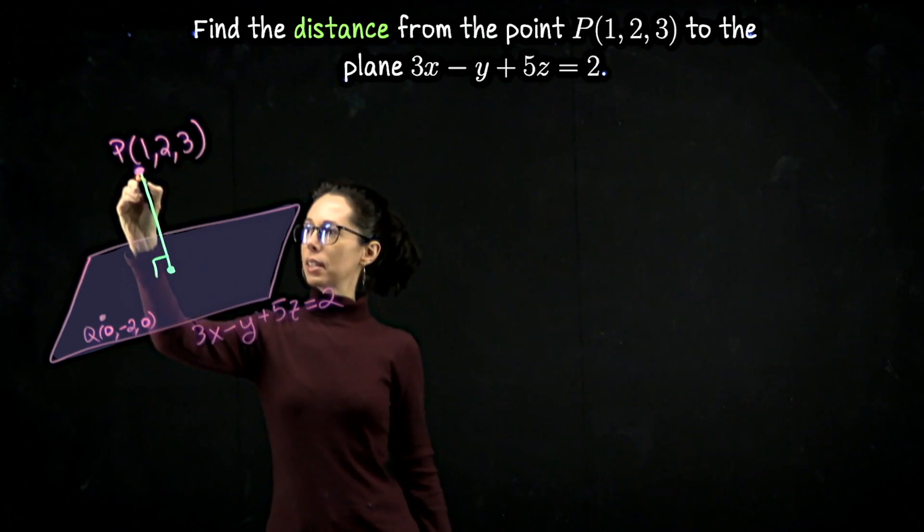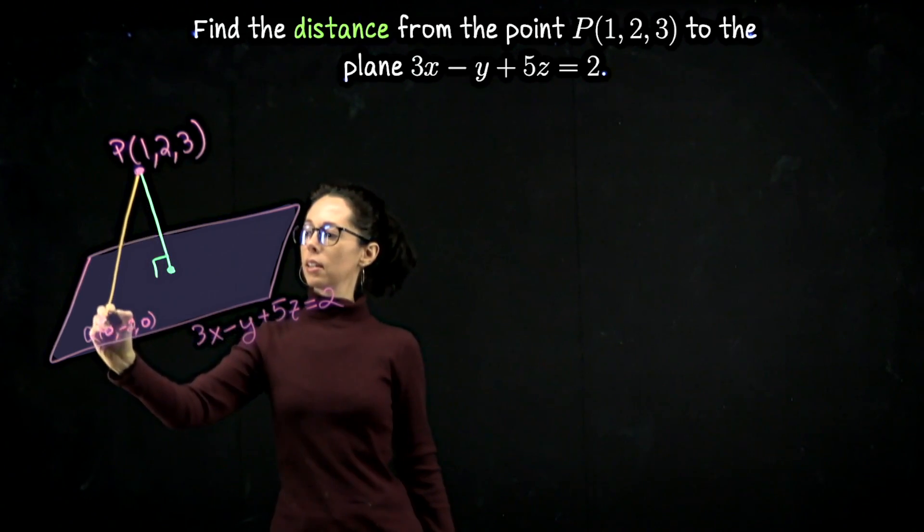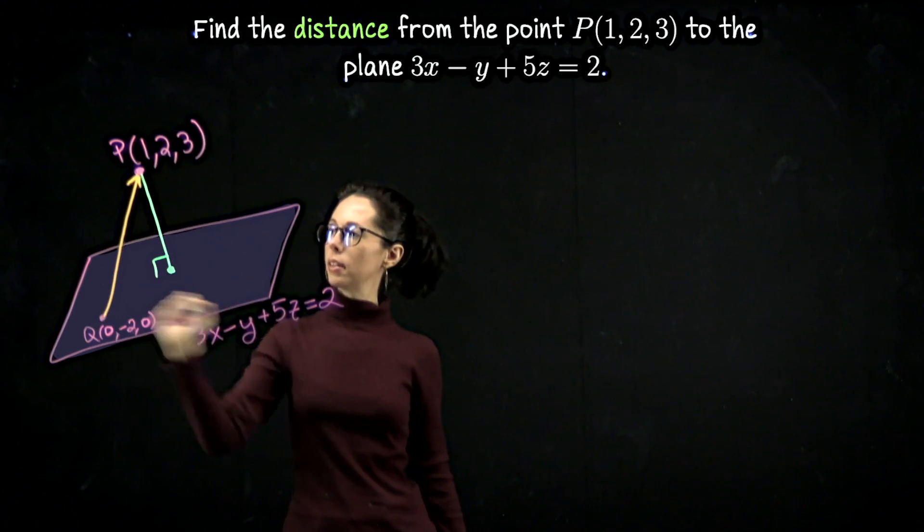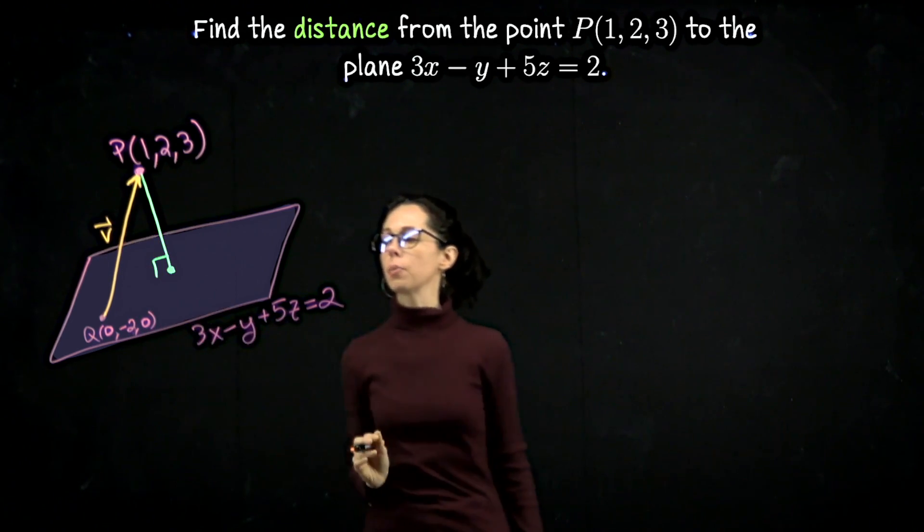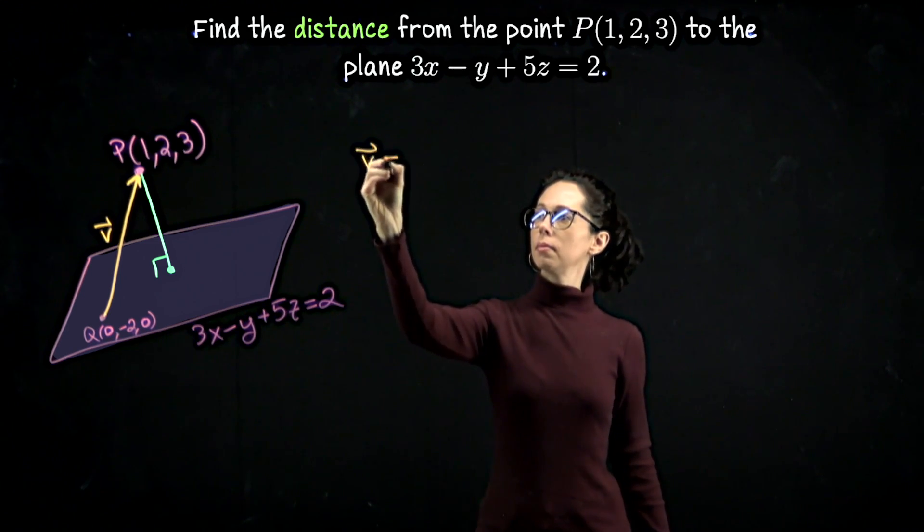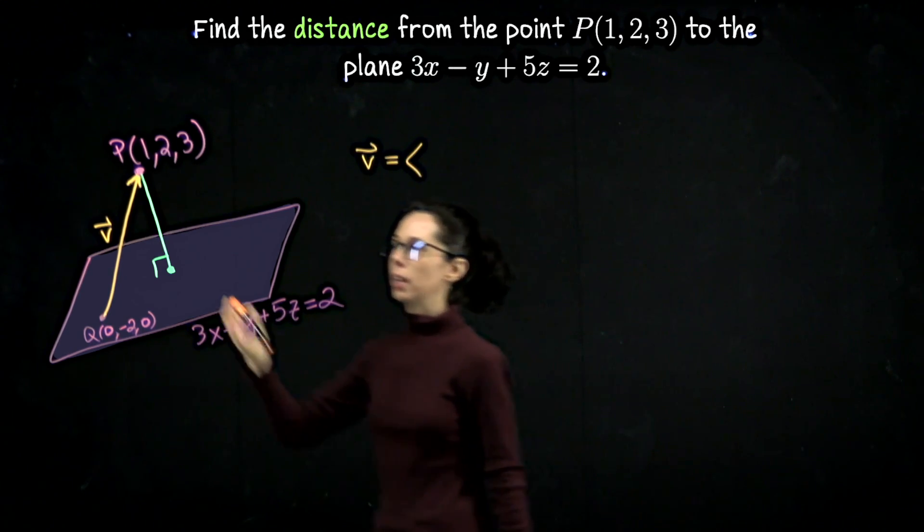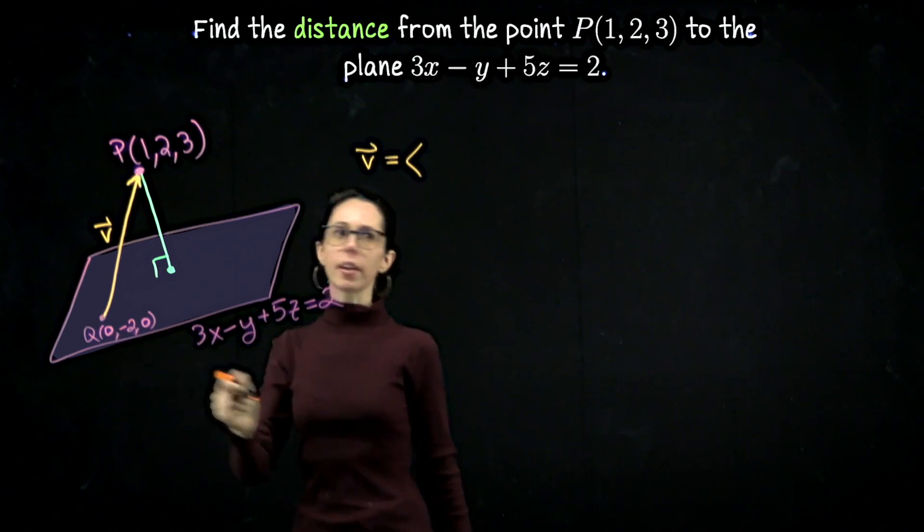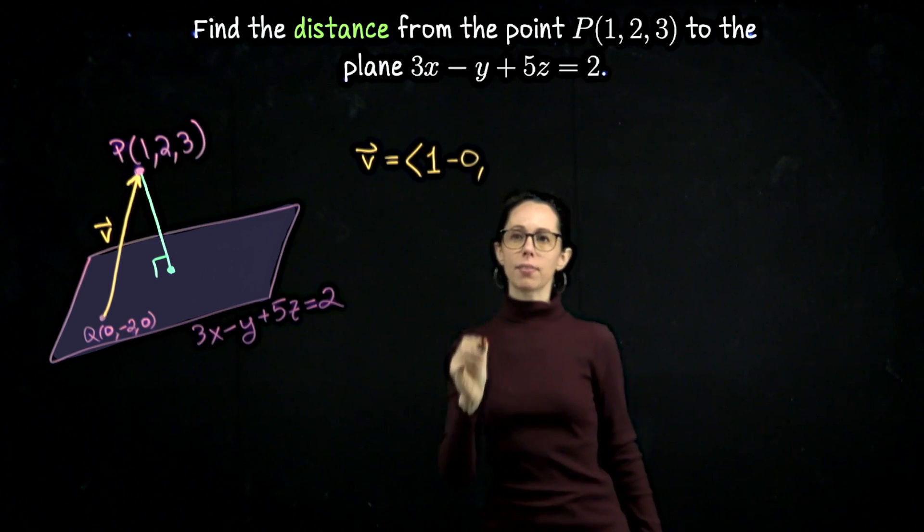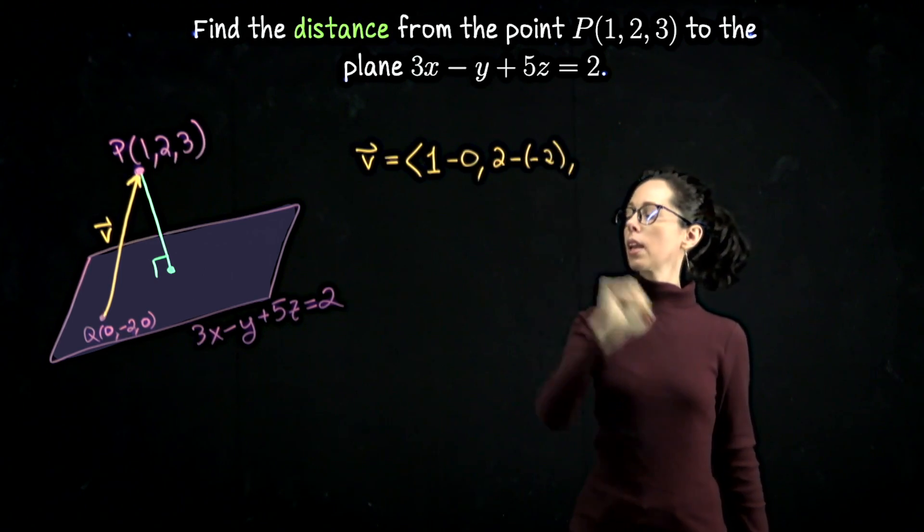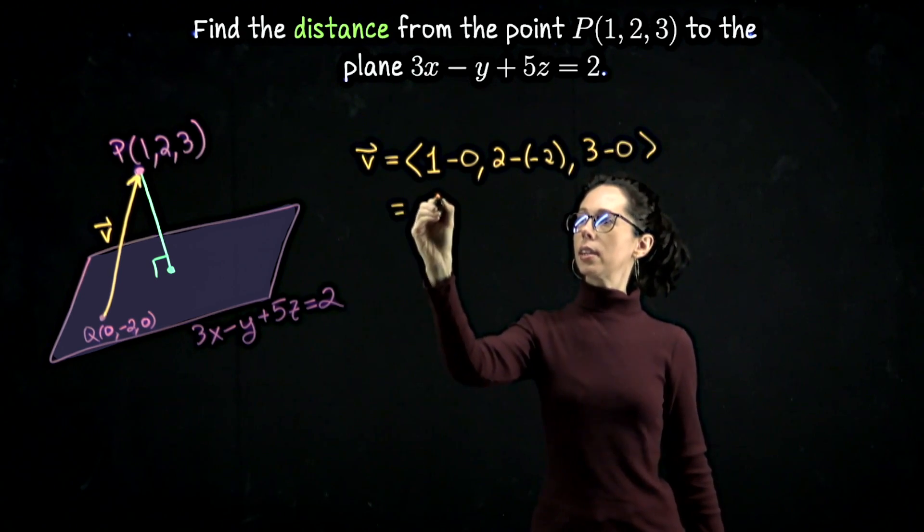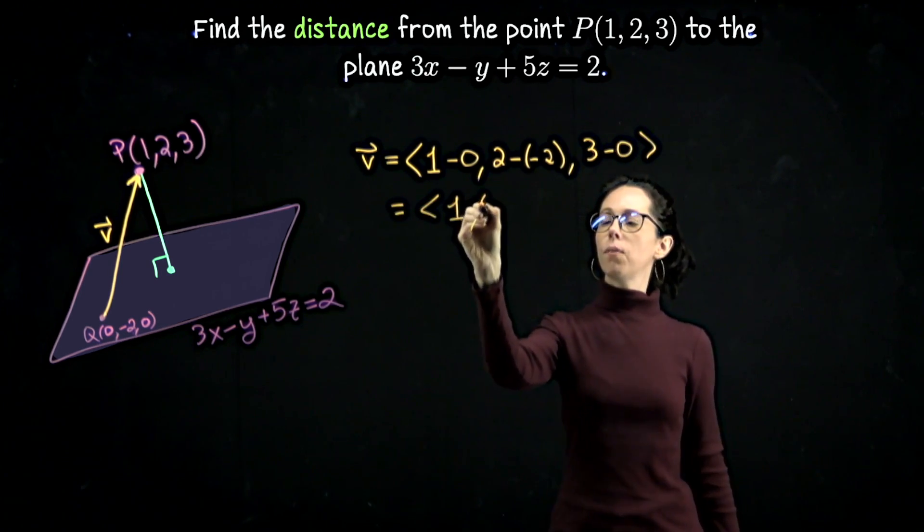Okay, the next thing I'm going to do is connect Q to P with a vector. So let me sketch the vector like this. Call this vector v. It's the vector from Q to P. So we can write down in coordinates what v is. It's going to be 1 - 0, I'll write that out, 1 - 0, 2 - (-2), 3 - 0. So that is the vector <1, 4, 3>.